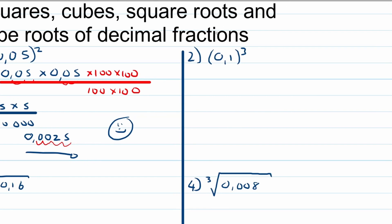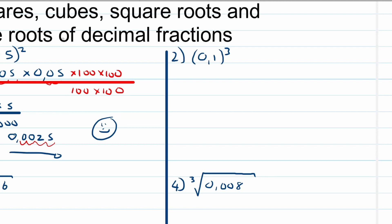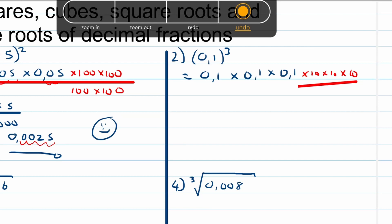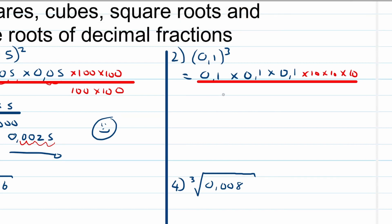Let's look at number two. This is 0.1 cubed, so we follow the same principle: it's 0.1 times 0.1 times 0.1. What do we need to multiply 0.1 by to make it a whole number? Just by 10, and we have to do that three times — times 10, times 10, times 10. Using the same principle, we can't just multiply the numerator; we have to multiply the denominator as well, giving us 10 times 10 times 10 at the bottom.